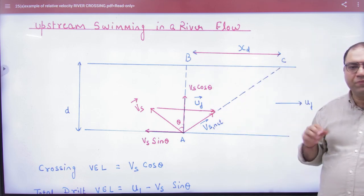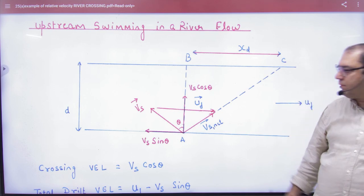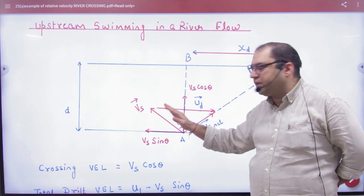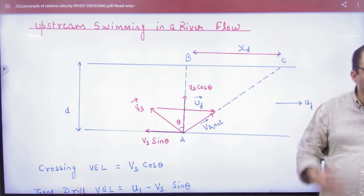So what will the drift distance be? Xt. We have to give B points. So the drift distance comes. Now there will be two components of this swimmer's velocity. One Vs cos theta and one Vs sin theta. So two components are gone.